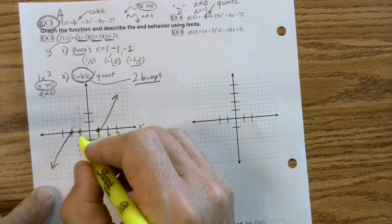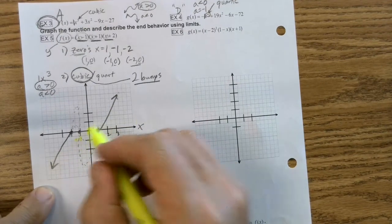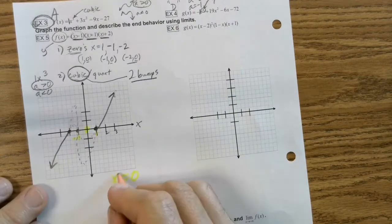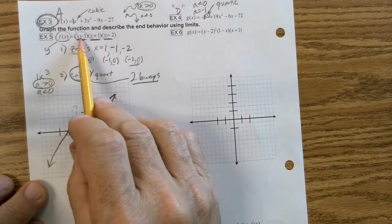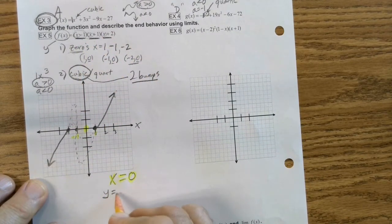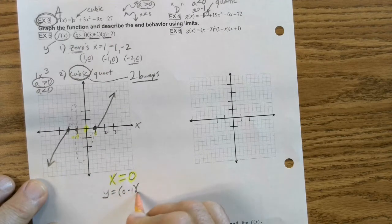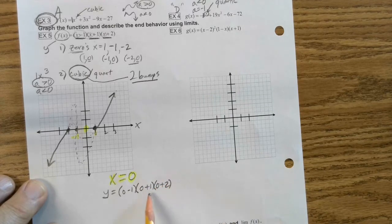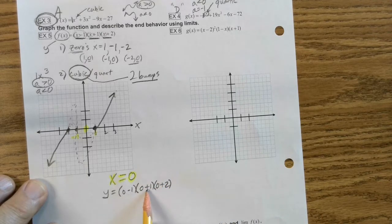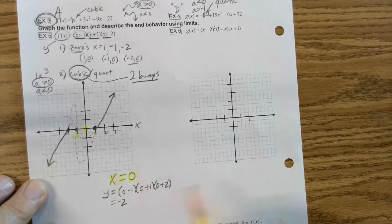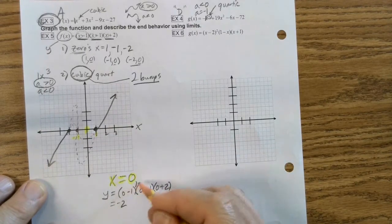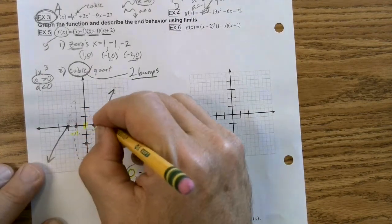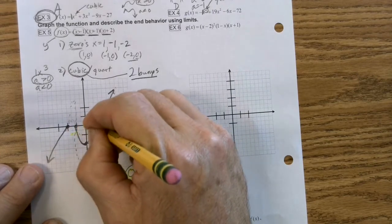If this is 1, and this is negative 1, what's exactly halfway? That's x equals 0. We're going to plug that in. So I'm going to let my x equals 0, plug it into this little rascal, and find out what my y is. So y is 0 minus 1, 0 plus 1, 0 plus 2. And so this is negative 1 times 1, which is negative 1, times 2, which is negative 2. So I know it's going to correspond with 0, negative 2. So I'm going to go 0 down to here. And so now I know that it goes down to here, and then back up.